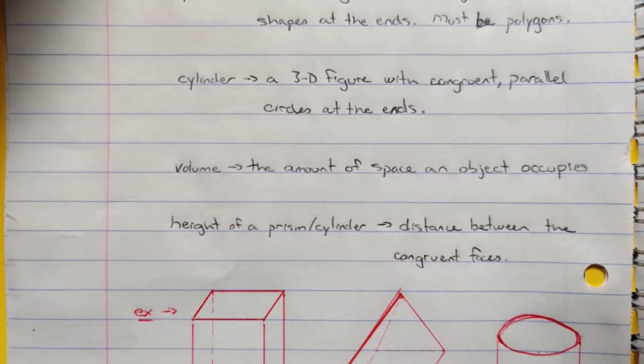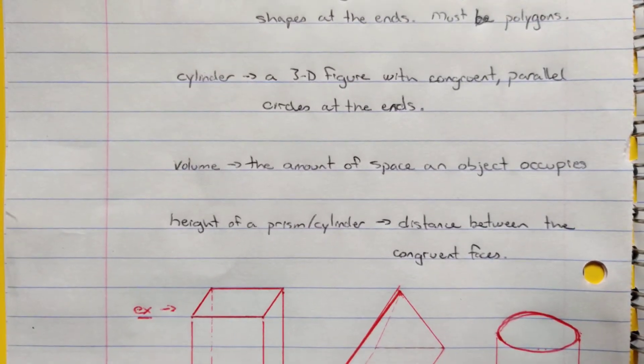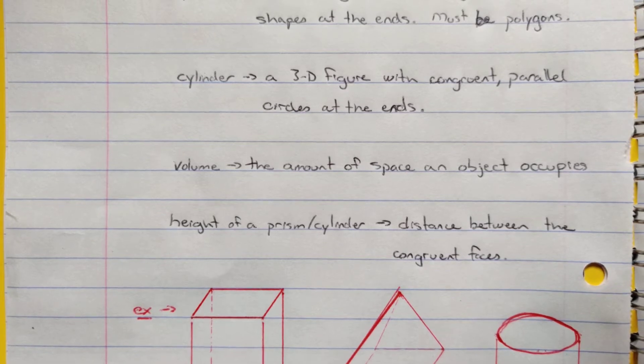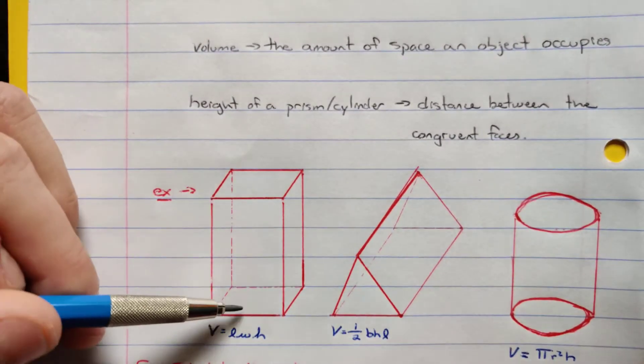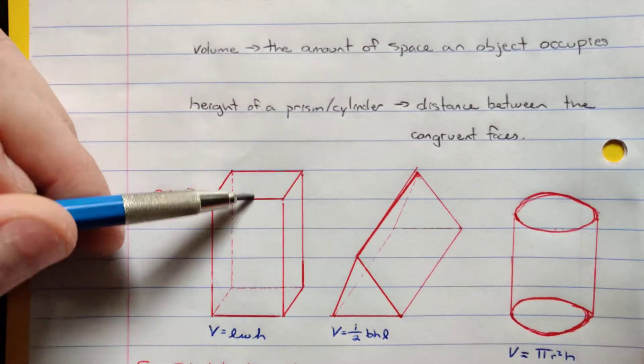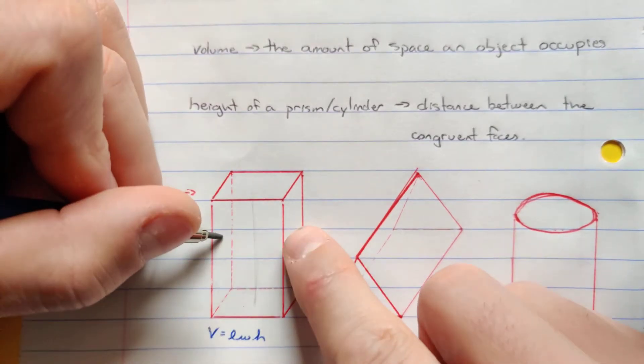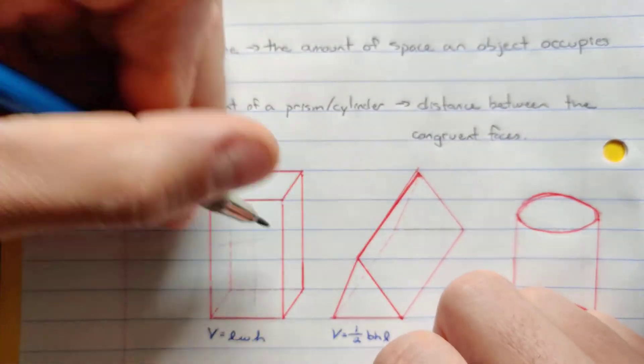And in terms of volume, volume is the amount of space that an object occupies. And then the height of a prism or cylinder is the distance between those congruent faces. So in this case, we have the squares that are congruent. This could be considered the height here. But also, these two rectangles are congruent. So we could say that the height is this way.